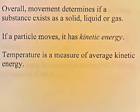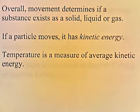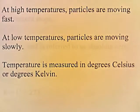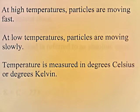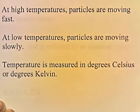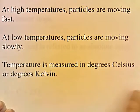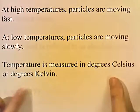Overall movement determines if a substance exists as a solid, liquid, or gas. If a particle moves, it has kinetic energy. Temperature is a measure of average kinetic energy — at high temperatures particles are moving fast, and at low temperatures particles are moving slowly. Temperature is measured in degrees Celsius or degrees Kelvin; in the United States we use degrees Fahrenheit, but in Europe and in science we often use Kelvin to do our calculations.